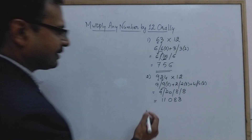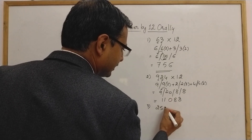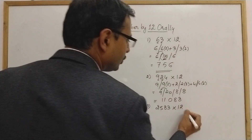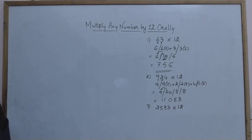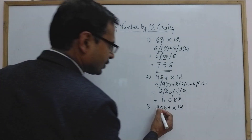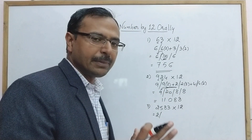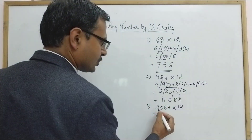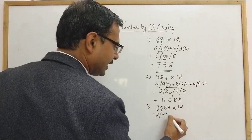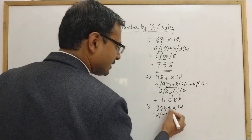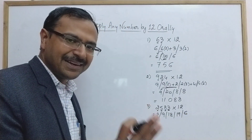For the third example, let's take a four-digit number: 2583 × 12. The same method applies and you'll be able to do it in just 2 to 3 seconds. Starting with 2: double of 2 is 4, plus 5 = 9. Double of 5 is 10, plus 8 = 18. Double of 8 is 16, plus 3 = 19. Double of 3 is 6. So we've written all five numbers directly.